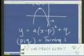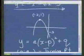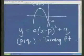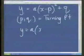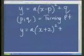And you'd do exactly the same thing. You'd approach it by substituting in your negative 2, 1 into p and q. So y would be a into x plus 2 all squared plus 1.